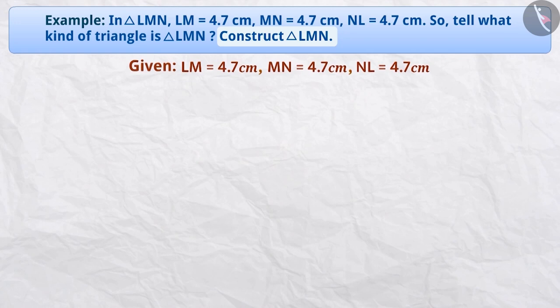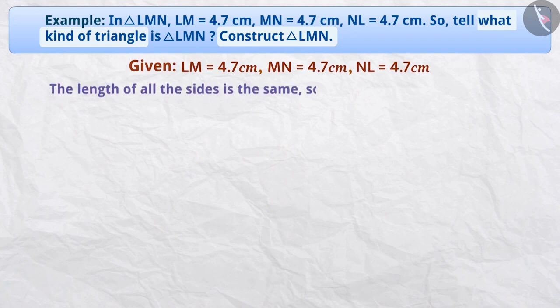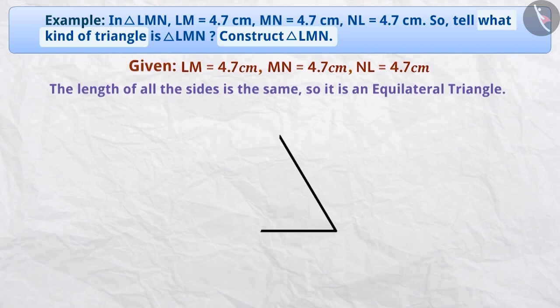As given in the question, the length of all three sides of triangle LMN are the same. Therefore, it is an equilateral triangle. Let us now construct triangle LMN.